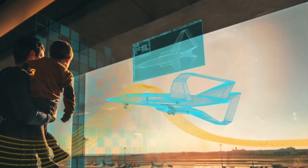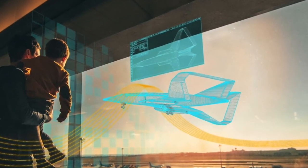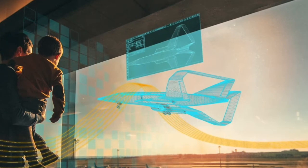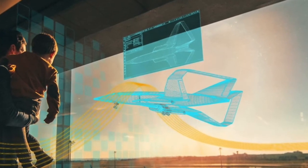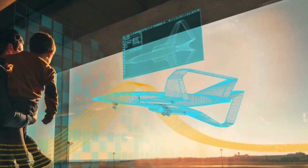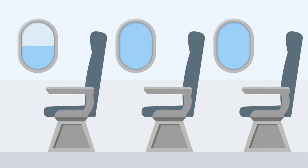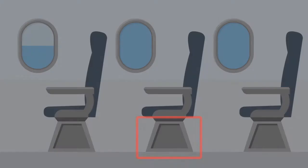Topology optimization can help you find the best lightweight shape for your parts that will still meet your performance requirements. This demonstration will show how you can use Simcenter 3D with NX NASTRAN Topology Optimization to get the best shape for a new airplane seat bracket design.